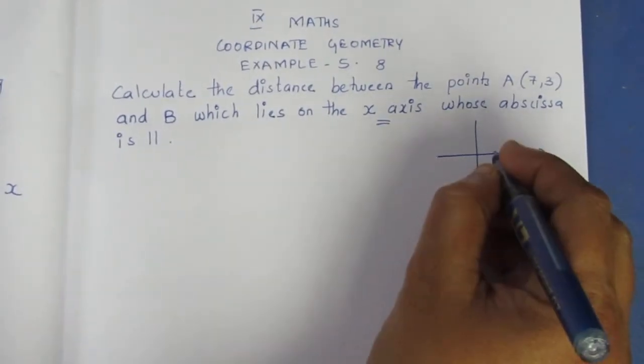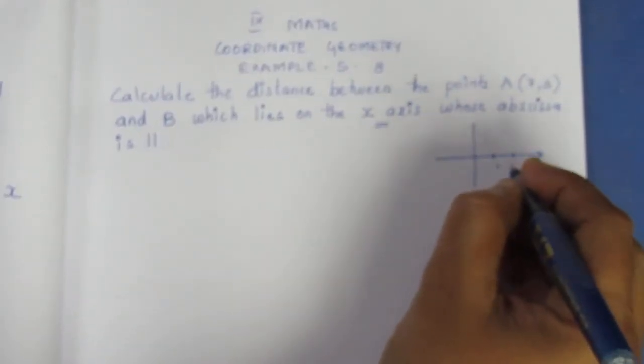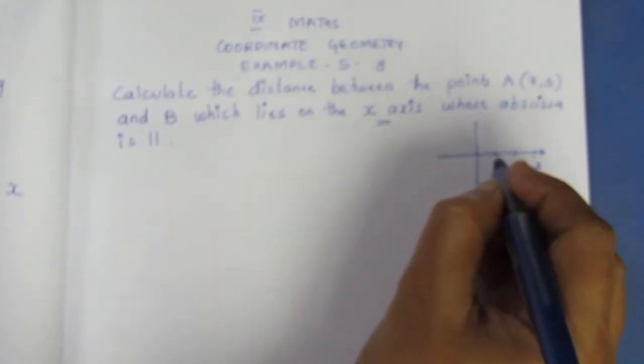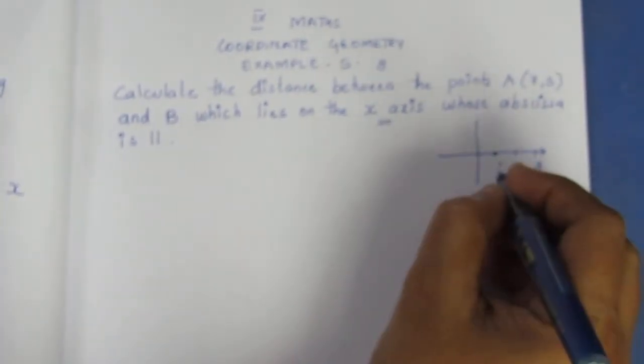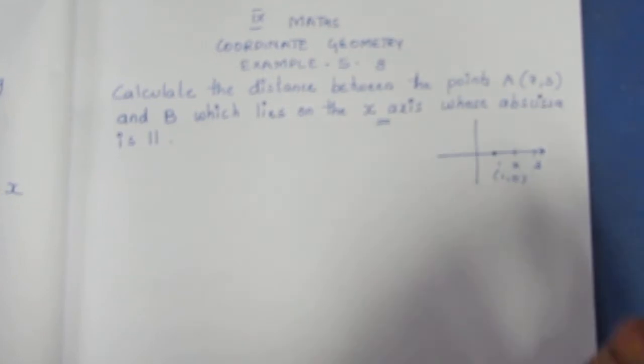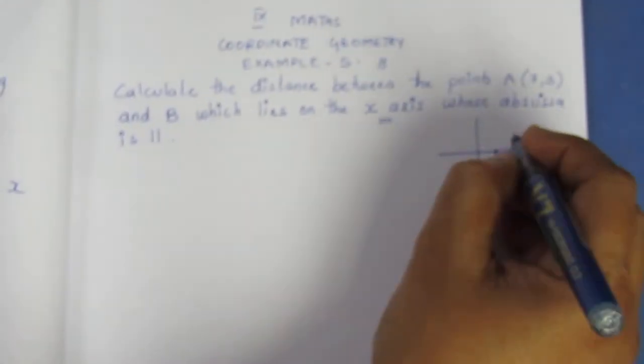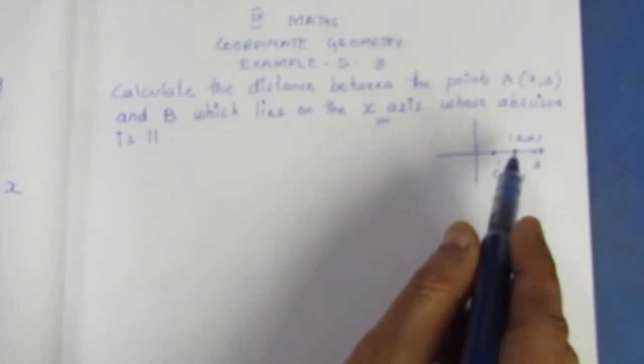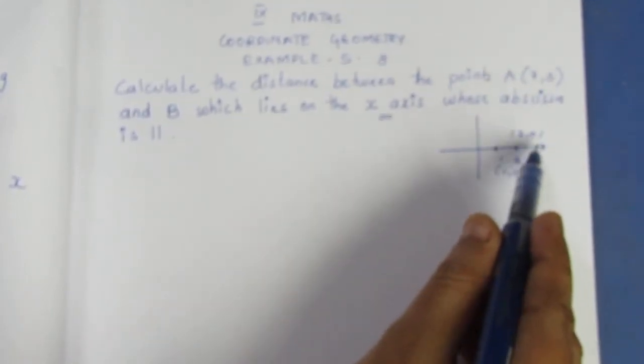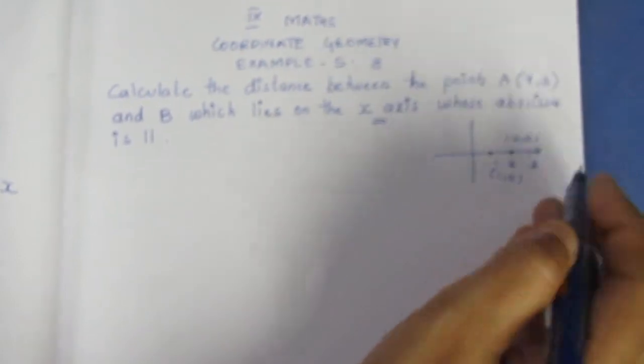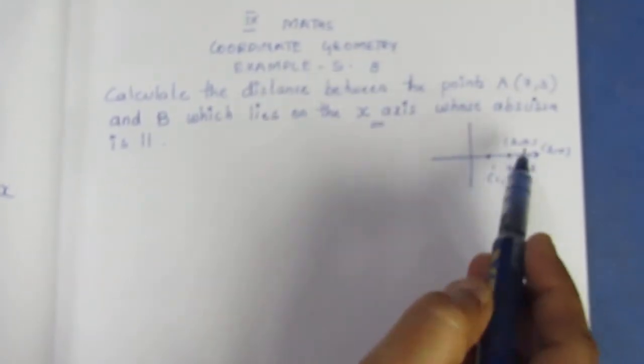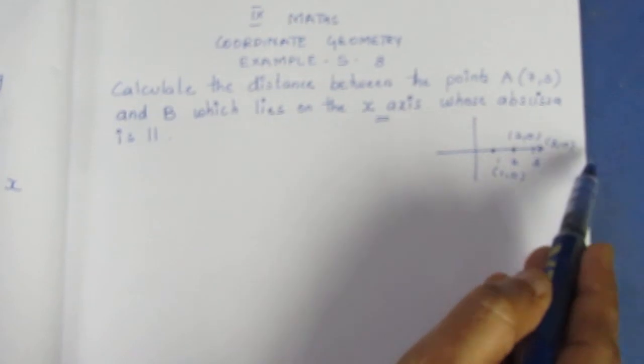If you look at this point, you can mark the point 1, 2, 3. If I plot this, what is the point? (1,0). What is the point? (2,0), (3,0). If you look at the y-coordinate value, it is 0.